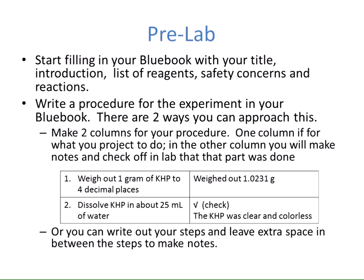There are two ways to approach writing the procedure. You can make two columns: one for what you plan to do, and the other for notes and check-offs confirming that part was done in the lab. For example, the first column might say 'weigh out one gram of KHP to four decimal places,' and in the right column you record the exact mass weighed, such as 1.0231 grams, and note observations like the KHP was clear and colorless.